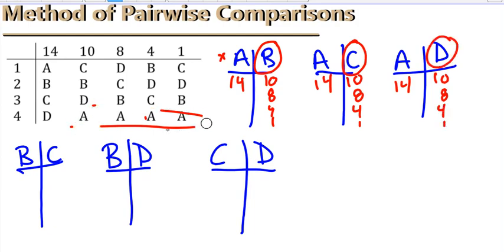So, now we can move on to B versus C. Comparing just B and C now, you see that B gets the 14, C gets 10, C gets 8, B gets 4 and C gets 1. So, C wins there.